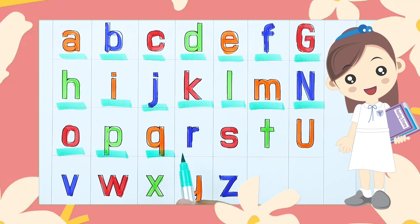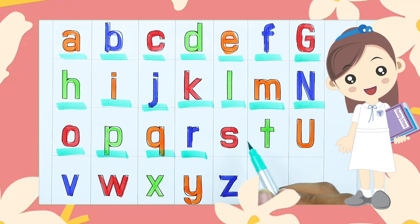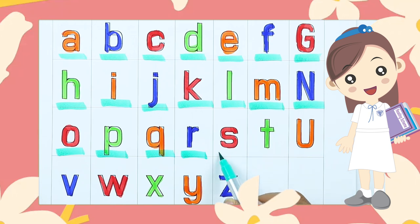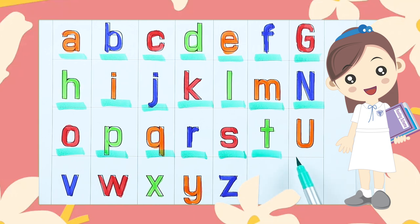Q. Q for — tell me — Q for queen. R. R for rabbit. S. S for sheep. T. T for tiger.